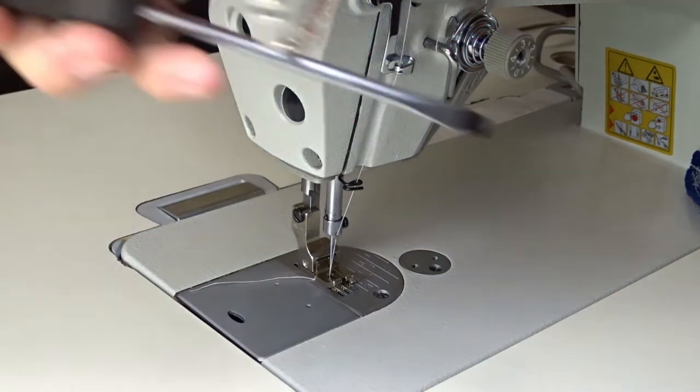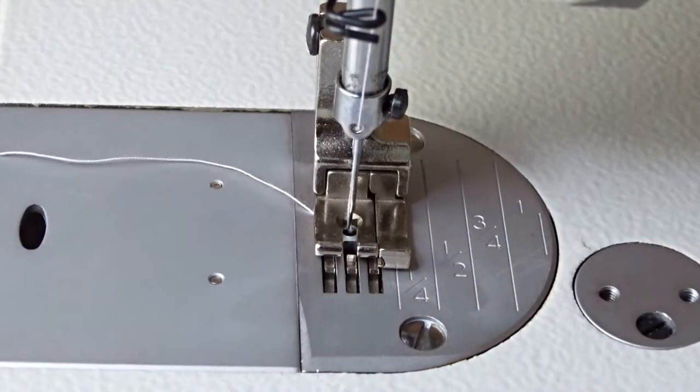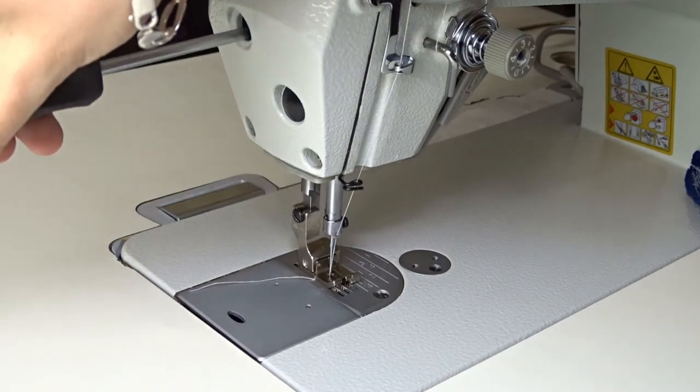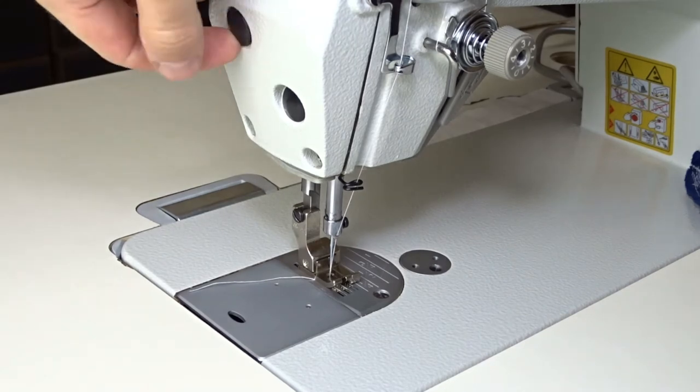Then using a screwdriver loosen the screw, adjust the presser foot, and tighten it again. Do not raise the presser foot while the screw is loose. Finally place a rubber cap to close the screw opening.